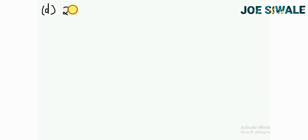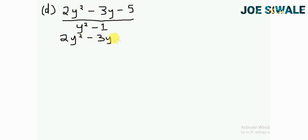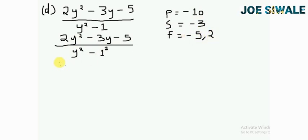To simplify 2y squared minus 3y minus 5 divided by y squared minus 1, I can factorize 2y squared minus 3y minus 5 by finding the product sum and factor. And I can factorize y squared minus 1 because that's the difference of two squares. So to find the product sum factor of 2y squared minus 3y minus 5, my product is negative 10, found by multiplying 2 multiplied by negative 5. My sum is negative 3, found by getting the coefficient of y. My two factors are negative 5 and 2.